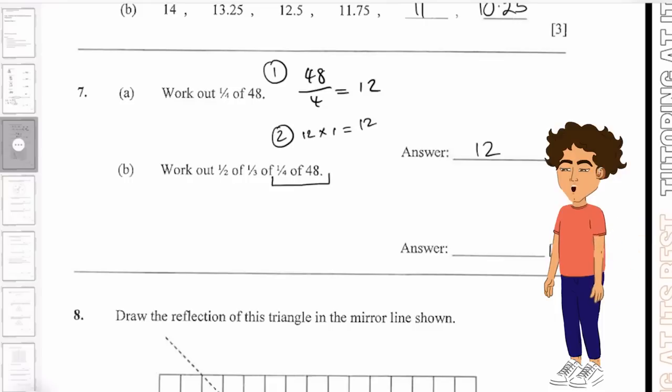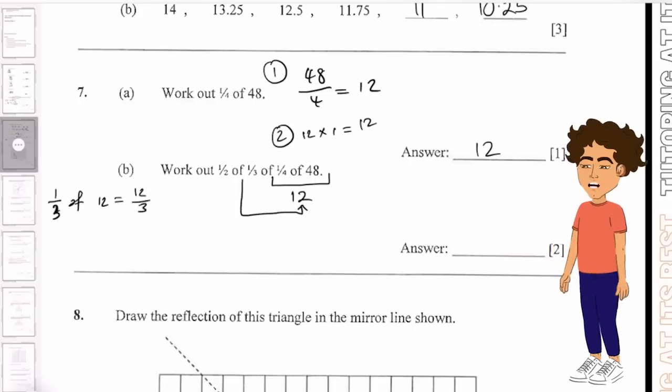The first thing I'm going to do is find out 1/4 of 48, which we found was 12. I'm then going to find out 1/3 of this answer. So 1/3 of 12. That is 12 divided by 3, which gives us 4.